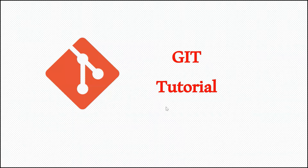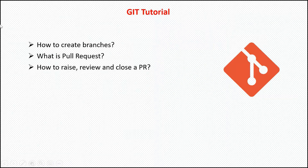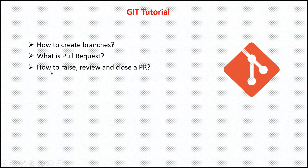Hey guys, welcome back to Maximum Automation. In my last video we discussed Git branching and a strategy which we can use to create branches. Today we are going to see how to create multiple branches, how to commit your code to the respective branches, what is a pull request or PR, and how to raise a PR, review the PR, and how to close it.